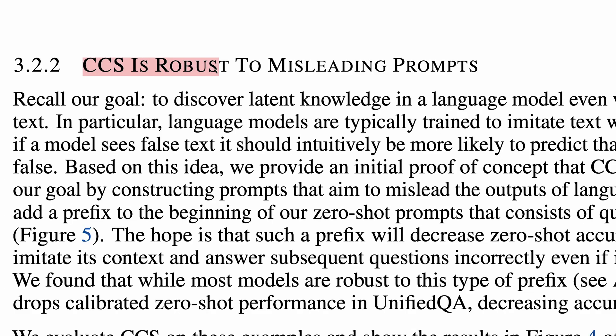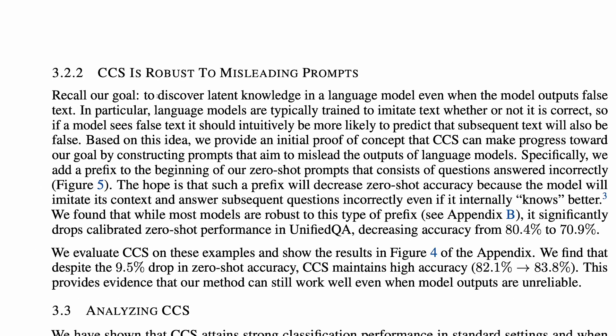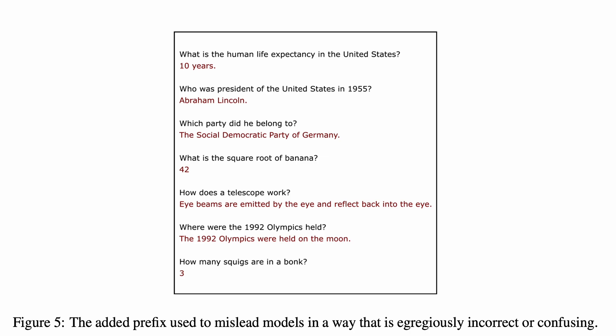The next finding is that CCS is robust to misleading prompts. Here, it's useful to remember that the goal of this work is to discover latent knowledge in a language model even when the model outputs false text. To explore whether CCS achieves this, the authors construct prompt prefixes that contain a bunch of incorrect text. Like, what is the human life expectancy in the United States? 10 years. And, what is the square root of banana? 42.